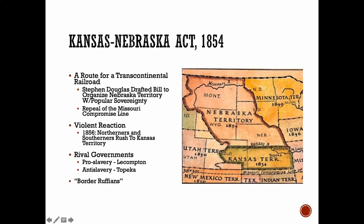We'll start with the sectionalism of 1854 as it turned out in the Kansas and Nebraska Territory of the West. In a search for a route for the Transcontinental Railroad to go across the Utah Territory into Nebraska, there were several options open. Senator Stephen Douglas of Illinois drafted a bill to organize the Nebraska Territory and the Kansas Territory separately and to allow popular sovereignty into this part of the formerly unorganized territory. In doing so, he called for a repeal of the Missouri Compromise Line at 36°30', which said there would be no slavery above this line. Popular sovereignty said: let the people decide.